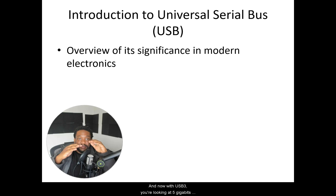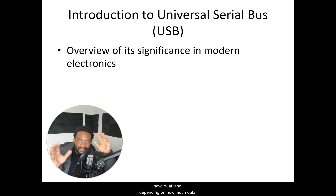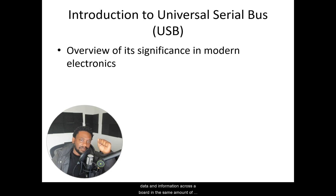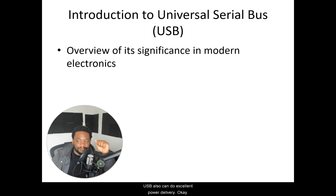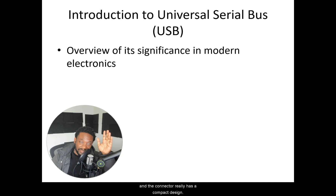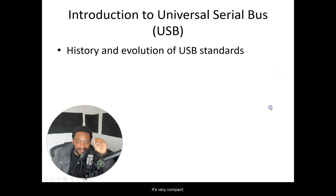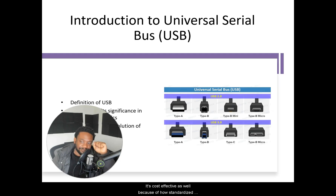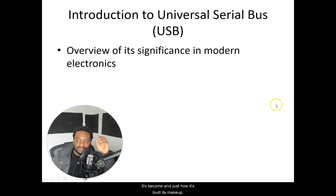With USB 3, you're looking at 5 gigabits per second, up to 20 gigabits per second in dual lane, depending on how much data. The point is with the USB standard, you can pipe so much more data across a board in the same amount of time as your other communication protocols. USB also can do excellent power delivery — with USB Power Delivery, or PD, you can get up to 100 watts just on USB-C. The USB connector also has a compact design and is cost-effective because of how standardized it's become.